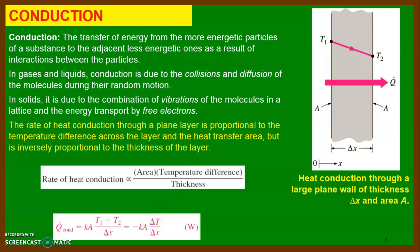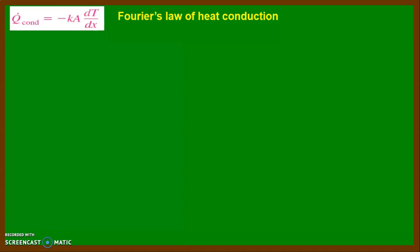Here T1 minus T2 introduces a negative sign, which we will discuss later. The final equation becomes Q-dot conduction equals minus K·A·(dT/dx), in units of Watts. This equation is generally known as Fourier's Law of heat conduction. We will now discuss the quantities that appear in this equation one by one.